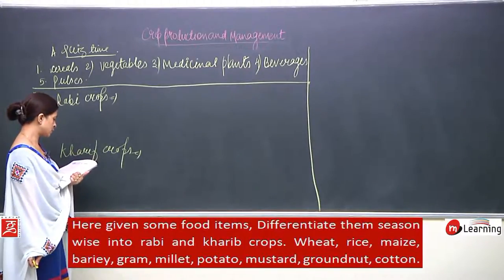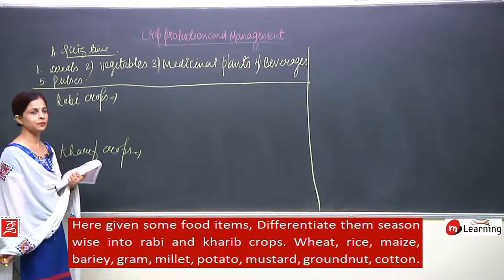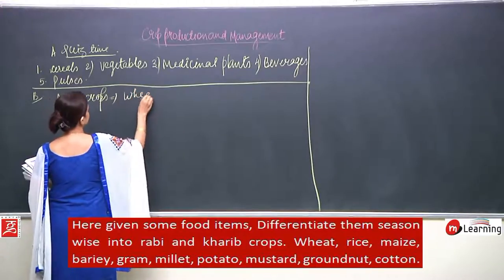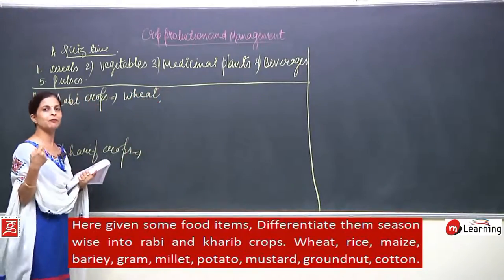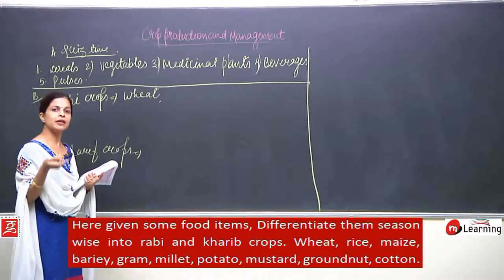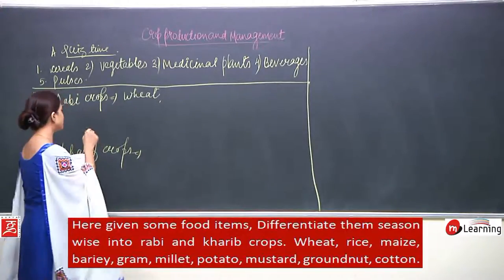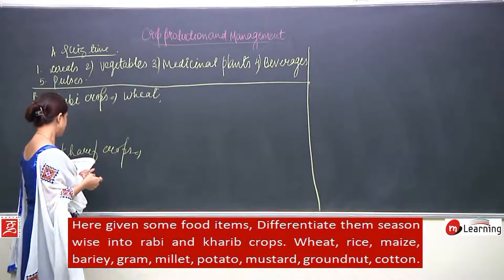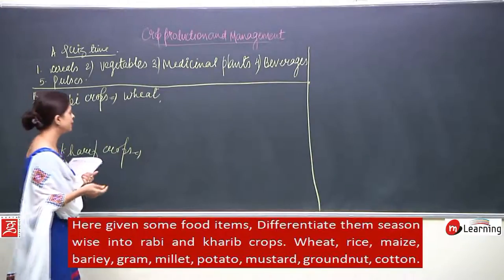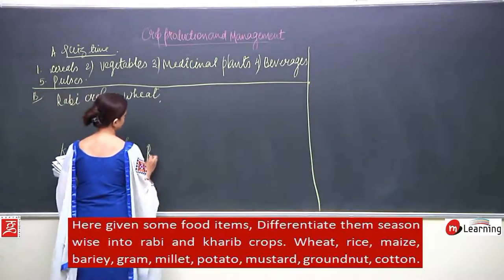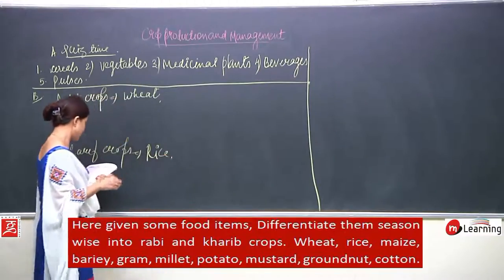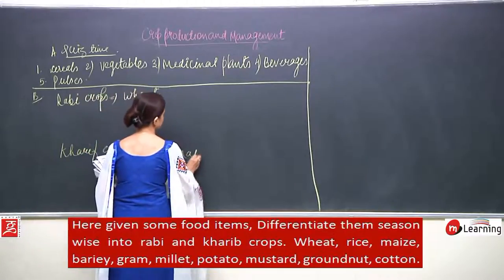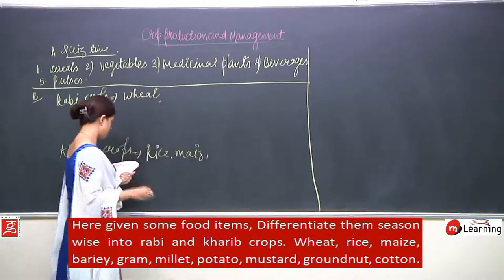Starting with wheat — wheat should be written under Rabi crops. We know wheat is a Rabi crop. Then rice/paddy — it is a Kharif crop. Maize needs water, so it is also a Kharif crop.